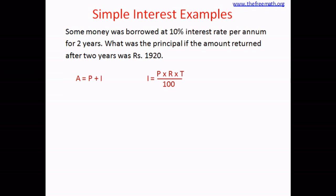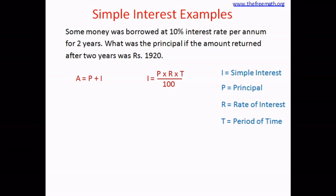Here, P is principal, R is rate of interest, and T is period of time. If we take the value of I from the second formula and substitute it into the first formula, it looks like this: A equals P plus PRT divided by 100. That means we have replaced I with the second formula.